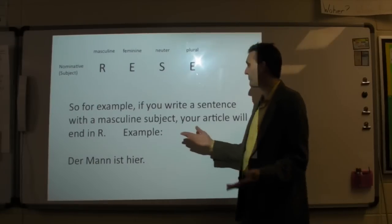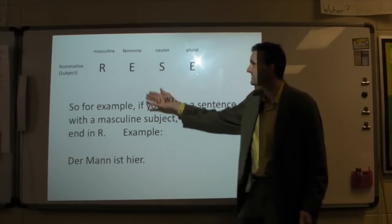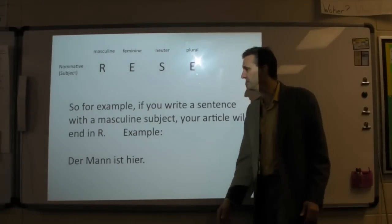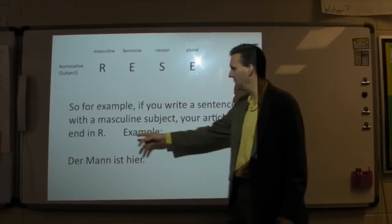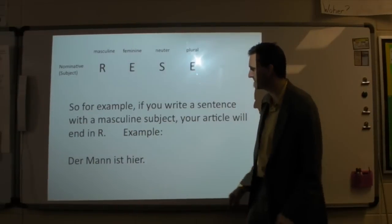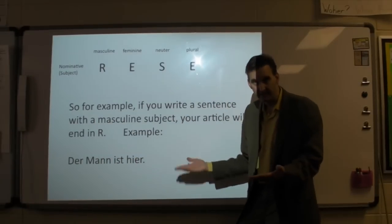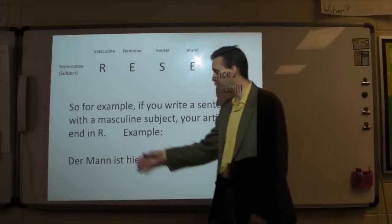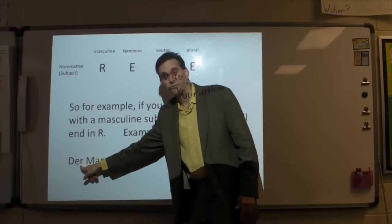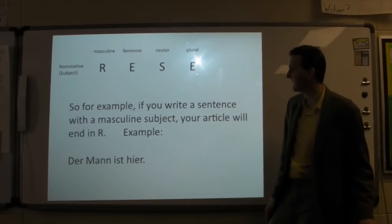For example, if you have a sentence with a masculine subject and you have an article, basically that article needs to end in R — at least a lot of articles do. We're going to get to a few exceptions. So in other words, der Mann ist hier. The man is here. Everybody knows that Mann is masculine — I need this R right there, so der Mann ist hier.